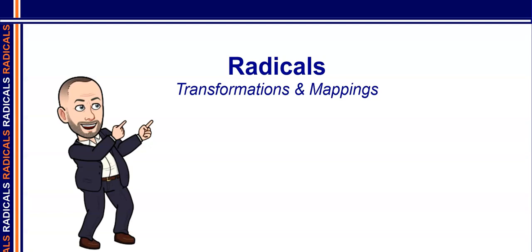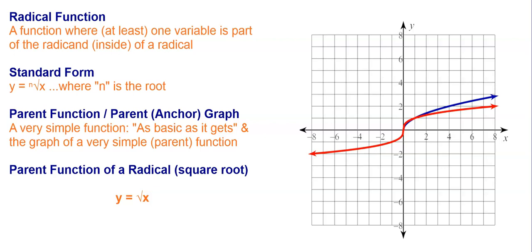Welcome back. We're going to continue our study of radicals by looking at transformations and mappings. Remember, a radical function is a function where at least one variable is part of a radicand, or the part of the expression underneath the radical symbol. The standard form of a radical function is y equals the nth root of x, where n represents the index.